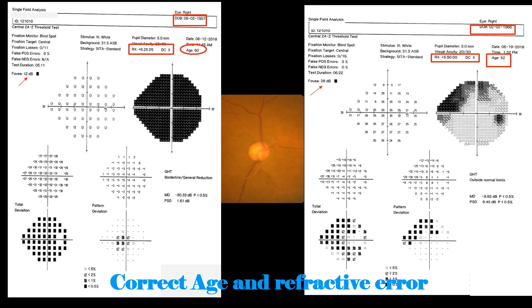As threshold values are compared with age-matched normative values, incorrect age entry will lead to comparison with the wrong set of normal values. Also, failure to properly correct the refractive error will cause stimuli to defocus and blur resulting in improper test results.